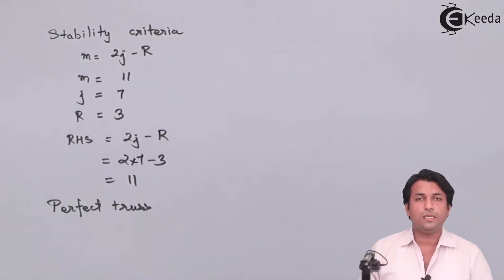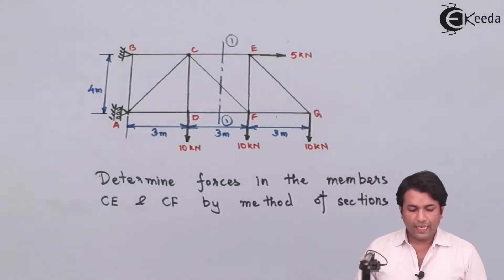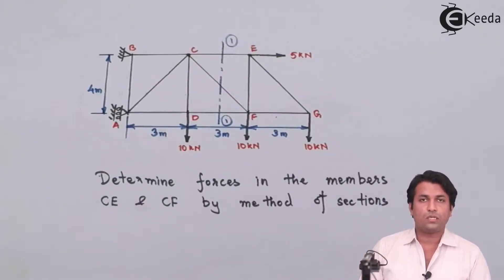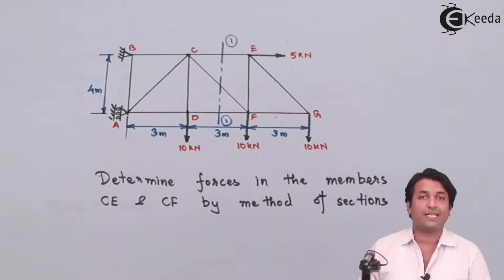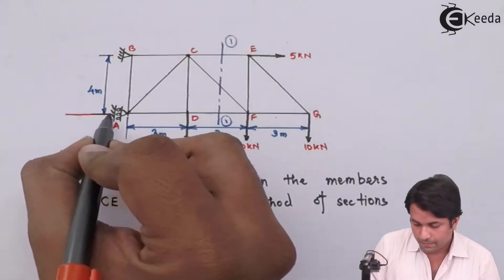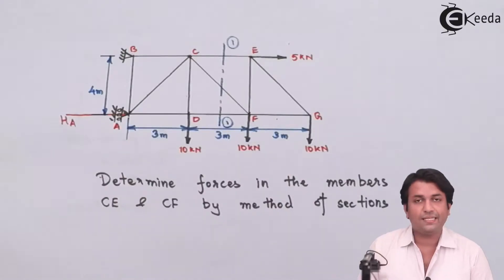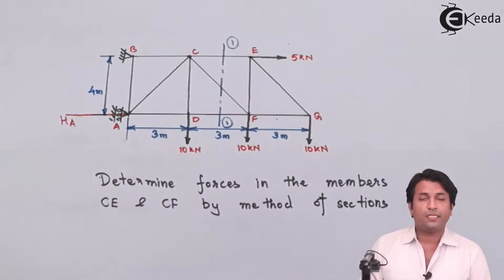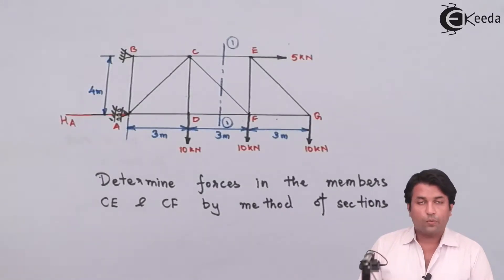The next step is to find out the support reactions. At A, I have a roller support, so I will have one single reaction perpendicular to the surface — in this case, a horizontal reaction. I will call it HA. For the hinge support, I have two reactions: one horizontal HB and one vertical VB.